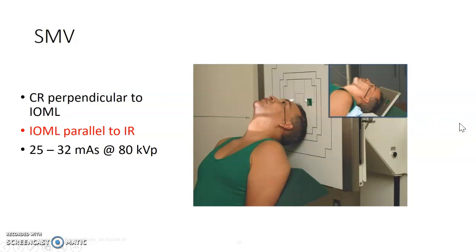The SMV is basically identical and really similar to the SMV for the skull or sinuses. The patient sits down with their back supported, or they're laying down with the neck extended, and the IOML is parallel to the IR. I tend to look at the forehead and chin from right over the top — that's important. This is not a comfortable position for the patient, so get yourself completely set up and do this fairly quickly.